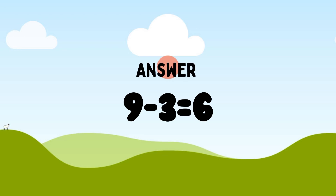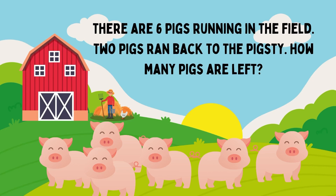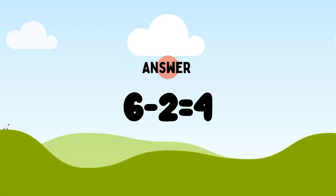Next question. There are 6 pigs running in the field. 2 pigs ran back to the pig's team. How many pigs are left? So, 6 pigs minus 2 pigs is equal to 4. So, 6 minus 2 is equal to 4 pigs left now.